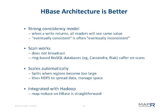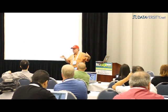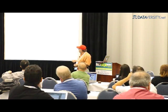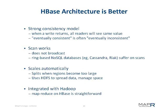HBase by design keeps strong consistency, which allows the application developer to make strong assumptions about the data. Scans work without broadcasting or scanning out of order. If you have a short scan, it goes to one server and is very fast. Ring-based NoSQL databases, which inherently depend on a hash key for balancing, just aren't going to do sequential scans that way. HBase also scales automatically, spreads data as you add new nodes, and is tightly integrated with MapReduce.